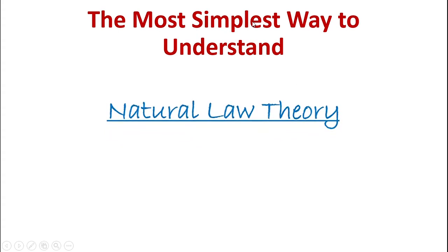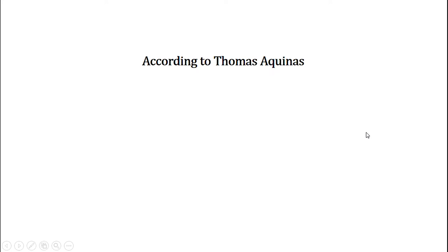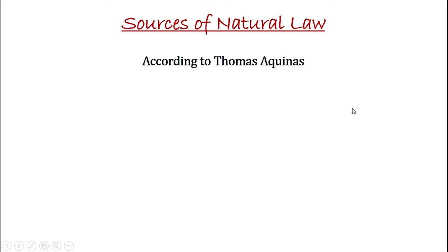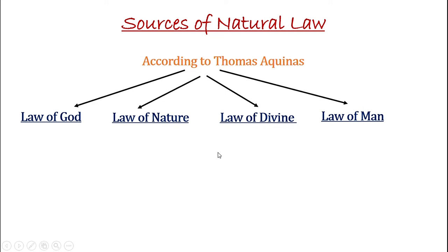First of all, you should understand that the whole natural law school of jurisprudence — their core idea — is basically preservation and protection. So, natural law theory's whole base is what: preservation and protection. And natural law has 4 sources: law of God, law of nature, law of divine, and law of man. And what is the one common purpose of these four? That is preservation and protection.